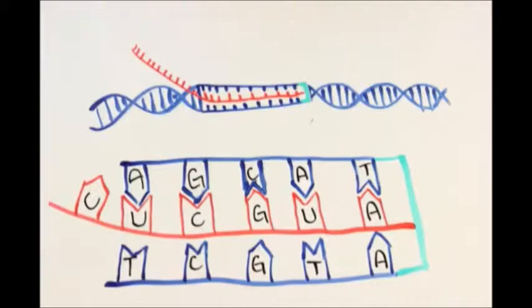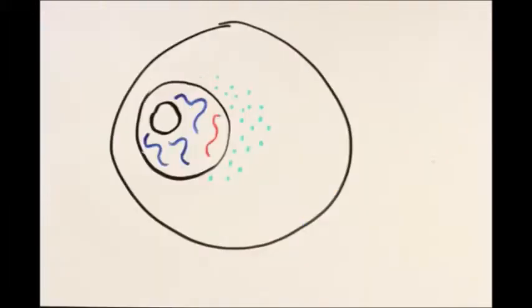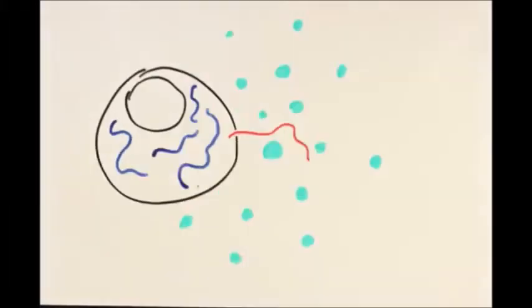However, this time, the T is replaced with U. Now, the mRNA carries the genetic code out of the nucleus to a ribosome in the cytoplasm.